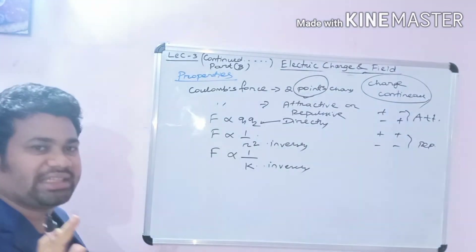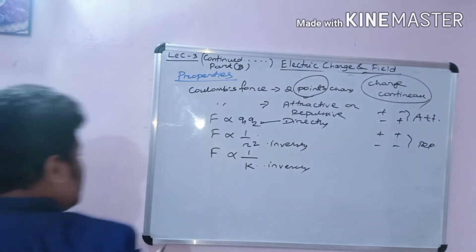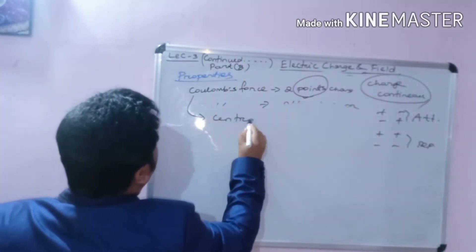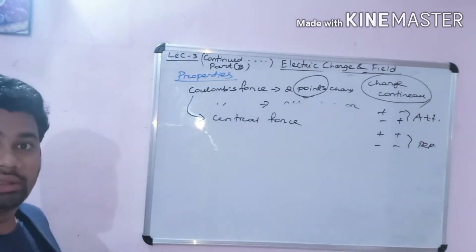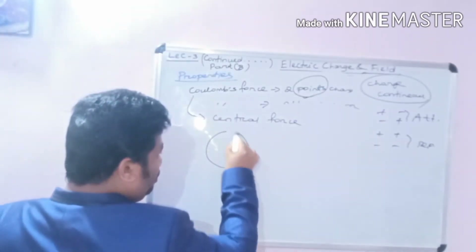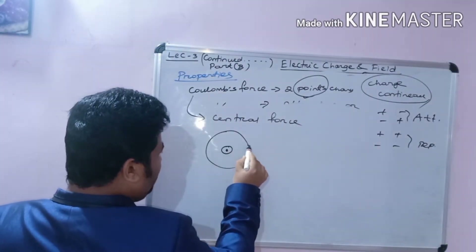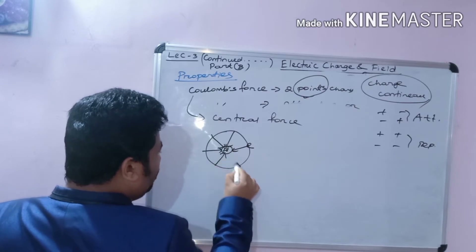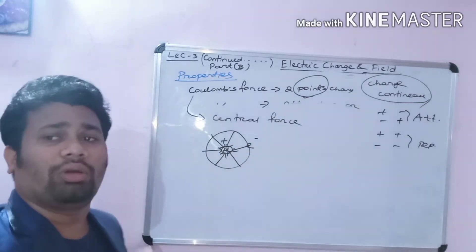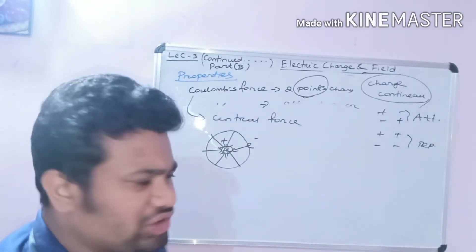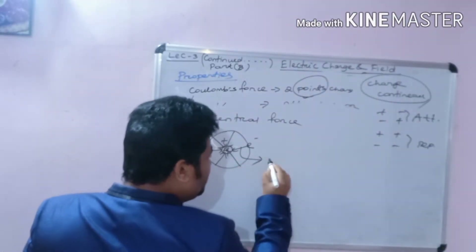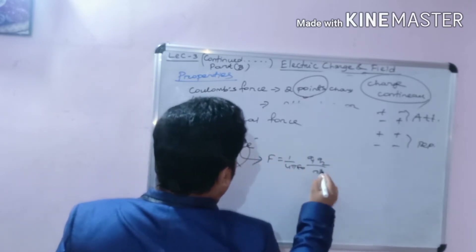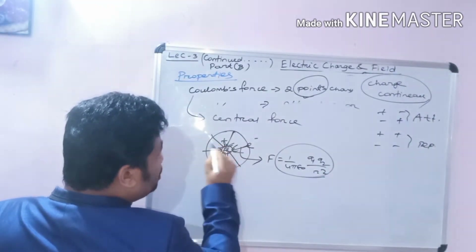Coulomb's force is a central force. For example, in atomic physics, the electron orbits the nucleus. The proton is positive and the electron is negative — opposite polarity charges attract each other. At every instantaneous position, the Coulomb force F equal to 1 by 4 pi epsilon-0 times Q1 Q2 by r squared is directed towards the center — towards the nucleus. Hence Coulomb's force is a central force.